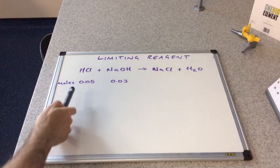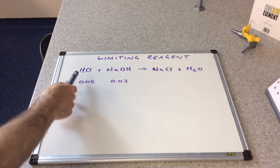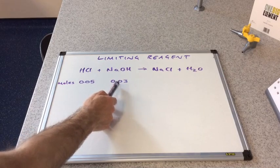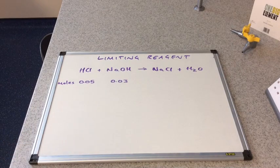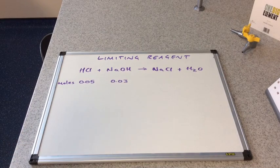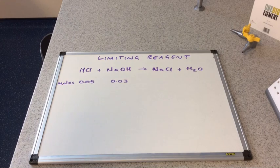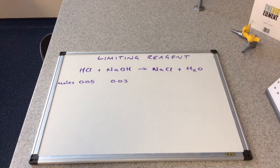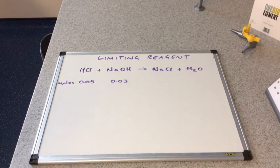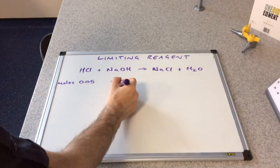You can see we've got 0.05 moles of acid and 0.03 moles of alkali. One of these will be what we call the limiting reagent. Basically, the limiting reagent is the one that runs out first. Hopefully you can see that it's obviously going to be this one here.